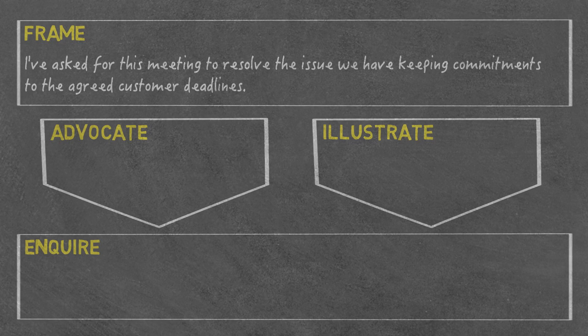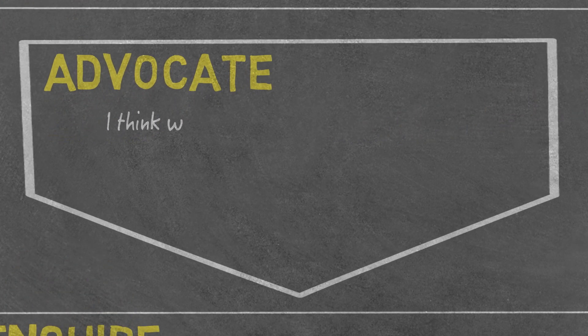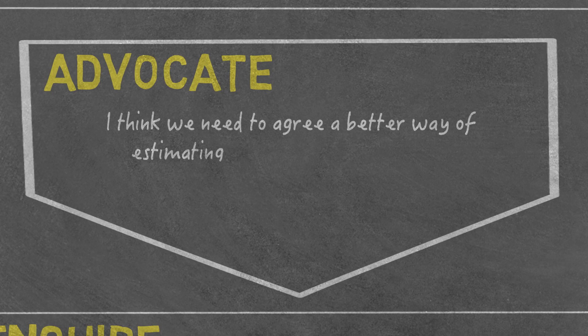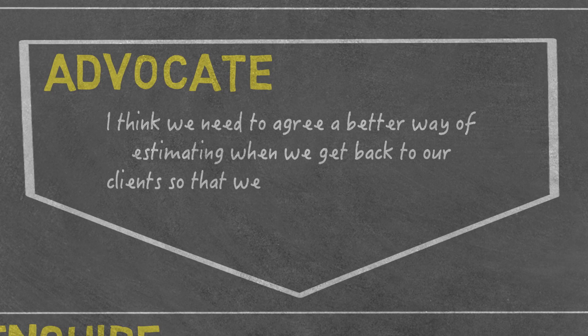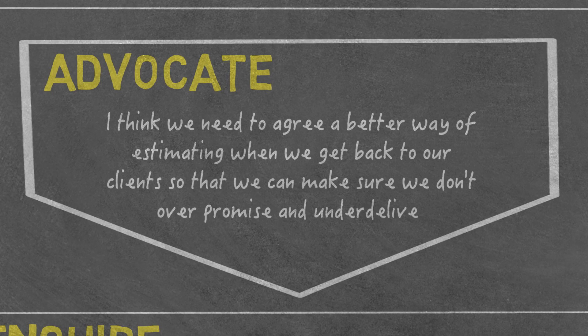Now I'm going to move into advocate, and remember this phase of the conversation is where I propose what I would like to see happen. So it sounds something like this: 'We do need to agree a better way of estimating when we can get back to our clients so that they don't feel we over-promise and under-deliver.' I've put forward a potential route and something that we could do to help improve the situation.